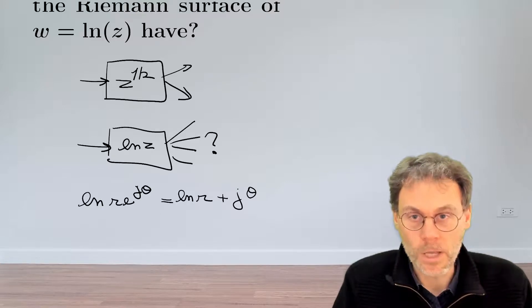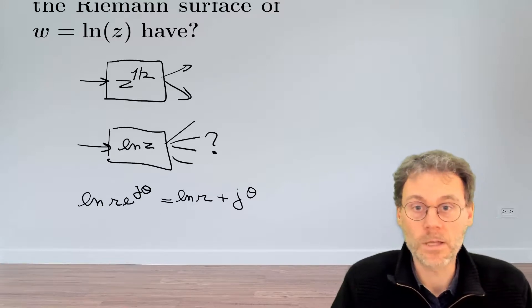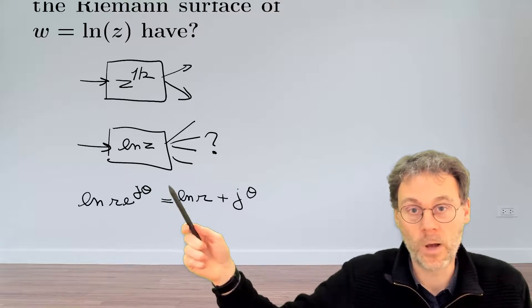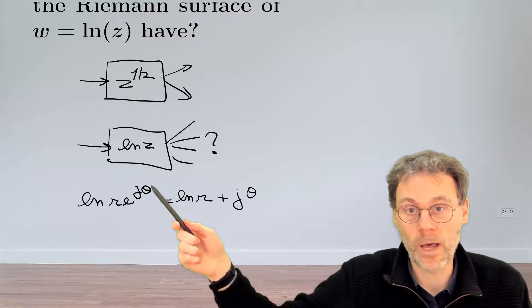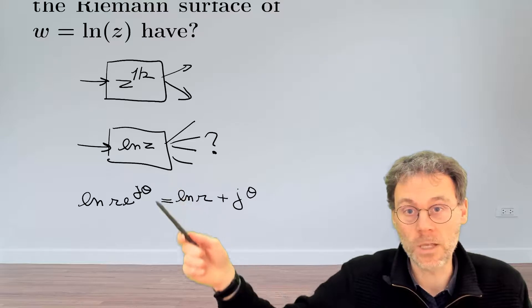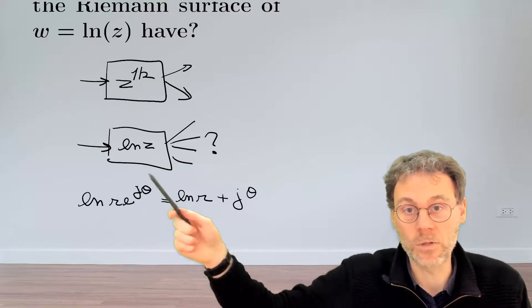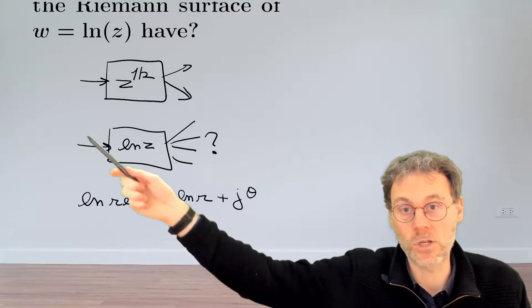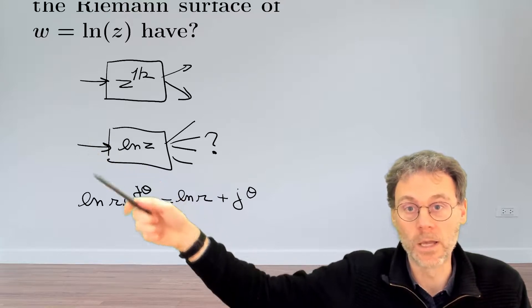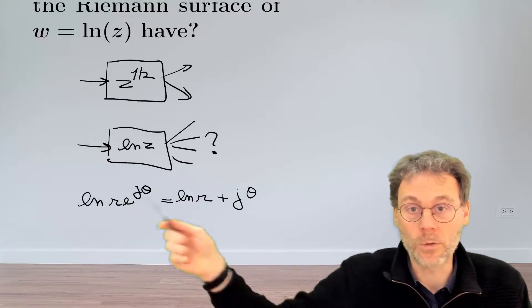The problem here, or at least the feature if you want, is that if you add 2pi or any integer copy of 2pi to that theta over here, you still end up with the same value, the same input z. So nothing changes here on the input side if you add 2pi to the argument of z.